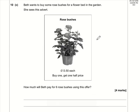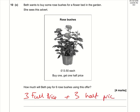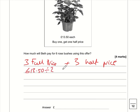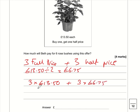Next question: it's buy one get one half price. Beth is buying 6 rose bushes, so 3 are full price and 3 are half price. Half price is £13.50 divided by 2, which is £6.75. Three at £13.50 is £40.50, and three at £6.75 is £20.25. Adding these gives £60.75.